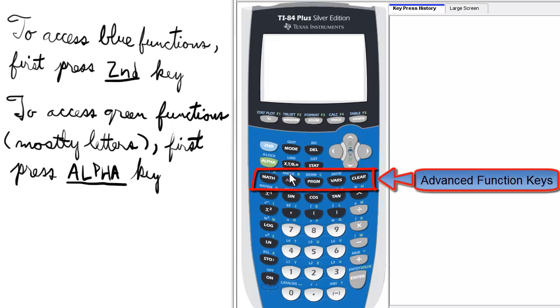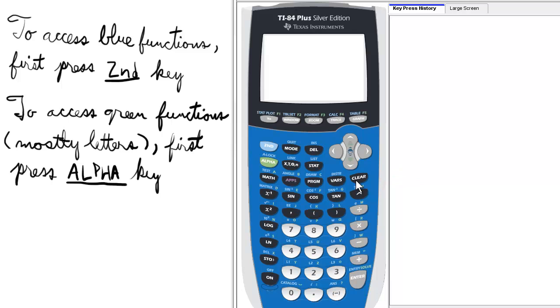Below the editing keys, we have the advanced function keys, starting with Math on the left, going all the way to Clear on the right.